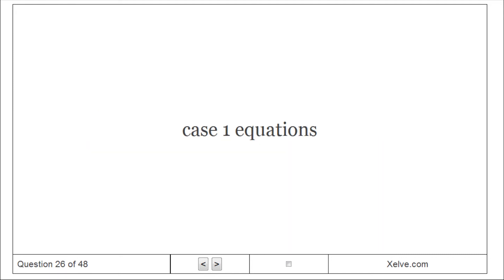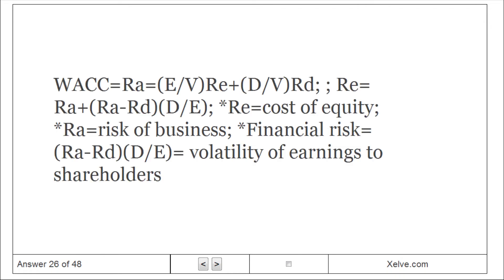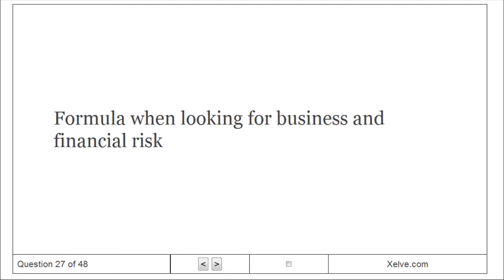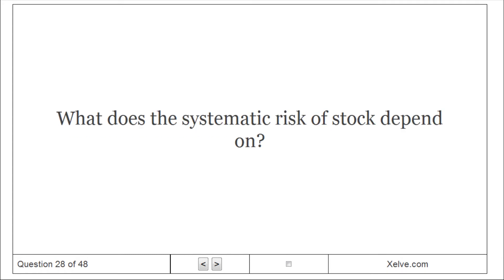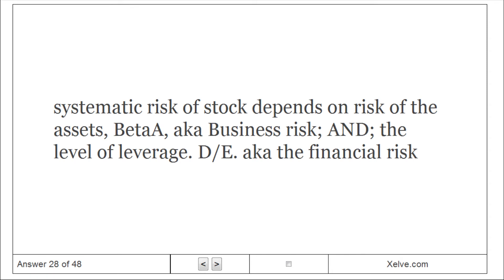Case 1 equations: WACC equals RE, where RE equals RA plus a risk premium. RE equals the cost of equity, which reflects the risk of the business plus the financial risk, where financial risk equals the volatility of earnings to shareholders. For business and financial risk, we use the CAPM formula: RE equals RF plus beta times the market risk premium. The systematic risk of stock depends on the risk of the assets (beta), also known as business risk, and the level of leverage (D/E), also known as financial risk.